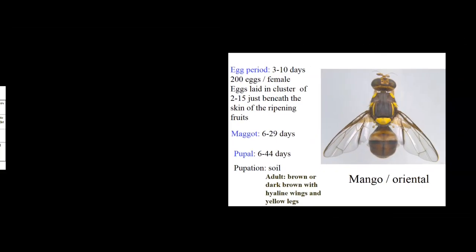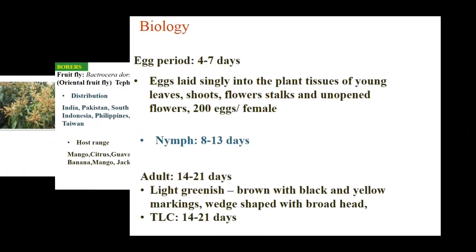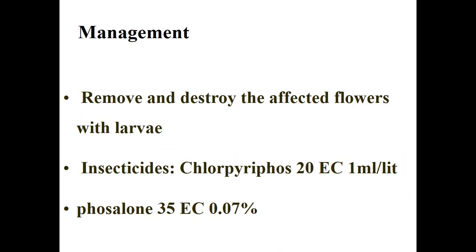Coming to inflorescence blossom feeder — Ublema versicolor, family Noctuidae, order Lepidoptera. Biology: egg-to-larva period is 18–20 days; pupa period is 8–9 days. The male moth is purplish-pink or light orange-pink with apical patches; female is purplish. Management: remove and destroy affected flowers with larvae; spray chlorpyrifos 20 EC at 1 ml/liter or vaseline 35 EC at 0.07%.